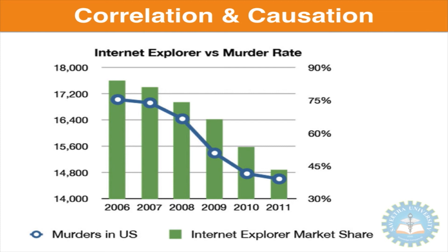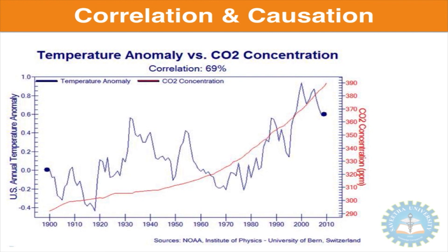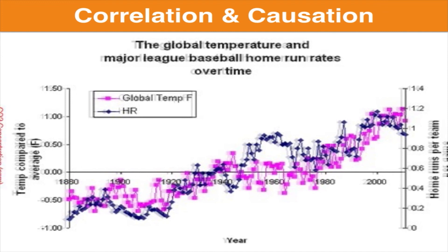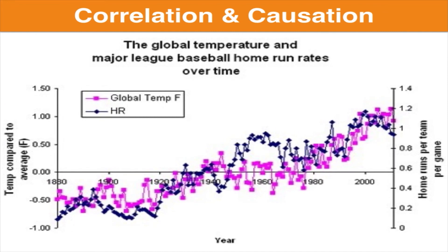Just because two things seem to move together does not mean there is causation. For example, there is a famous global warming study where you can see the temperature change and a deduced correlation with CO2 concentration in the atmosphere. Another interesting correlation is the global temperature difference and major league baseball home run rates over time — which matches even better than the CO2 levels. You should never confuse correlation with causation; there are other methods to determine if the correlation you see has any significance or is actually causing the effect.